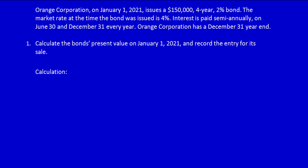The market rate at the time the bond was issued is 4%. The market rate is the rate that the bond purchaser could have received if they had purchased another investment vehicle in the open market at this time. So the bond purchaser would have received a higher interest rate had they chosen a different investment vehicle. Interest is paid semi-annually on June 30th and December 31st every year.